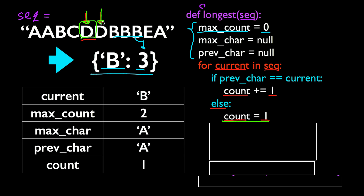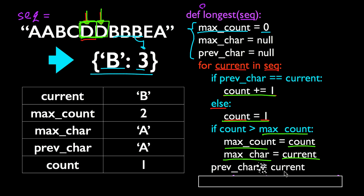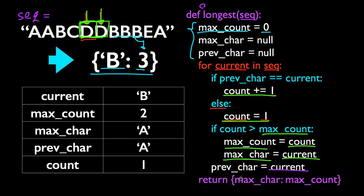But when we get to the second D, we're looking at a sequence of 2 Ds, and the length of that is 2, so count will be 2. If this new count is larger than max_count, which is the largest count we've seen so far, then we're going to update max_count to be count. And we're also going to update the corresponding character, max_char, to be the current character. After that, we're going to update prev_char to be the current character. And at the end of the function, we're going to return a dictionary with max_char as the key and max_count as the value.